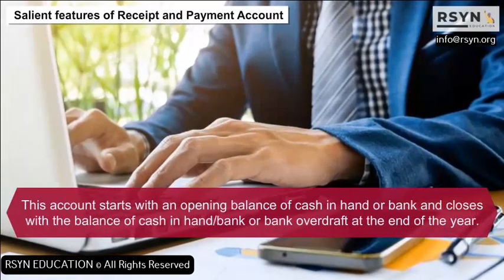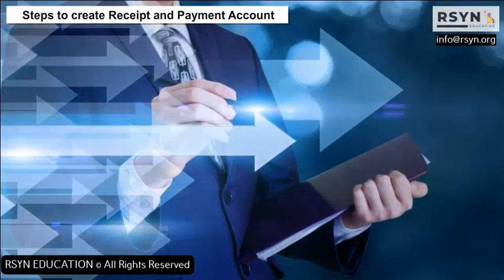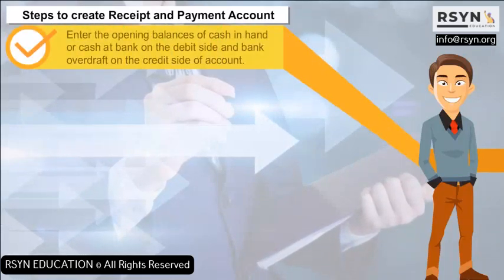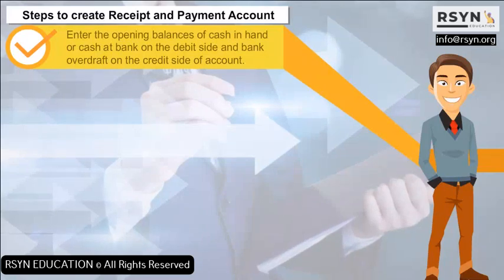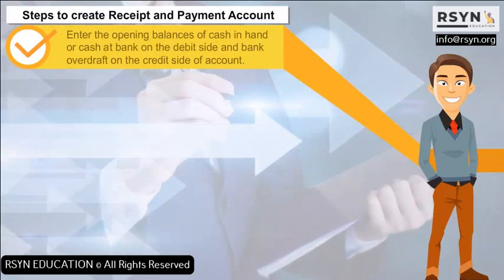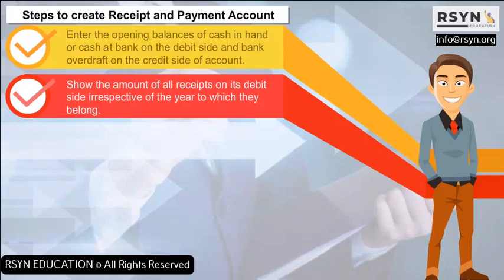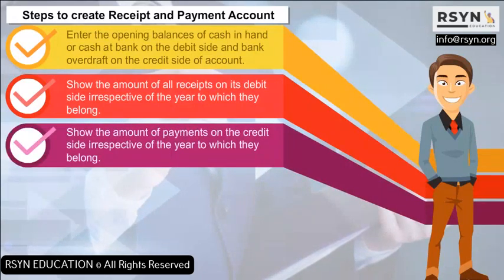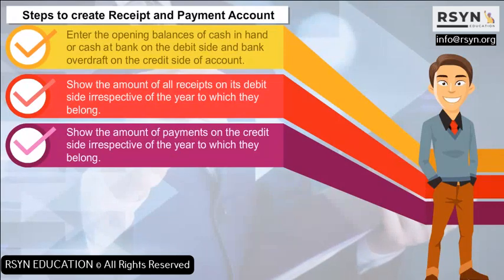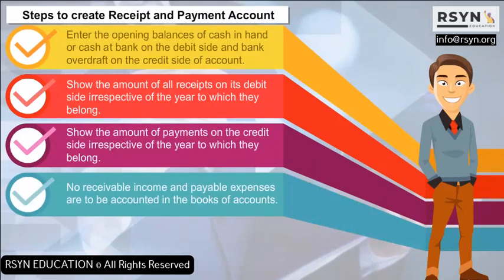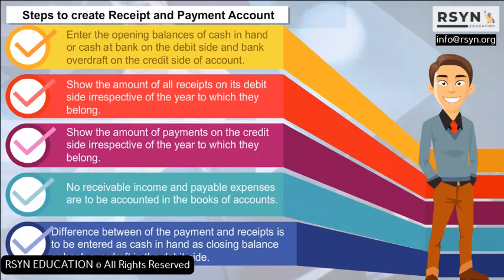Steps to create a receipt and payment account: Enter the opening balances of cash in hand or cash at bank on the debit side, and bank overdraft on the credit side. Show the amount of all receipts on the debit side and all payments on the credit side, irrespective of the year to which they belong. No receivable income and payable expenses are to be accounted in the books. The difference between payments and receipts is entered as cash in hand as closing balance, or bank overdraft on the debit side.